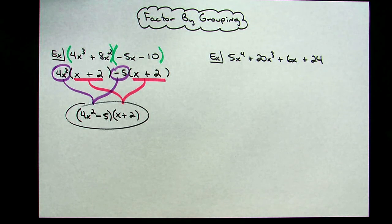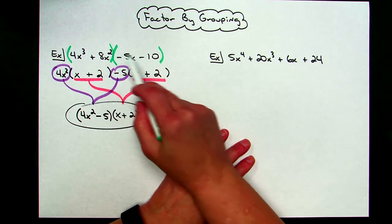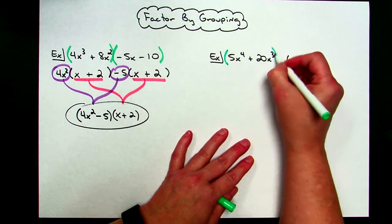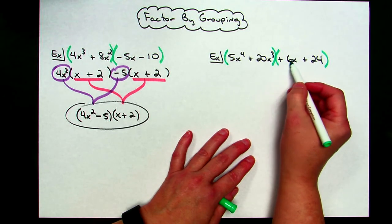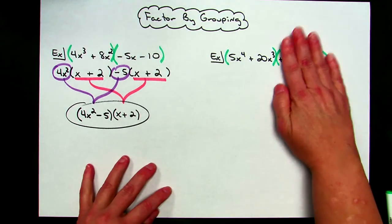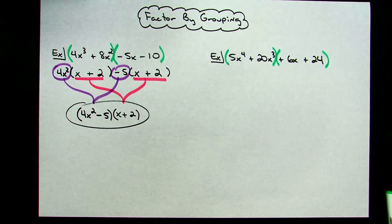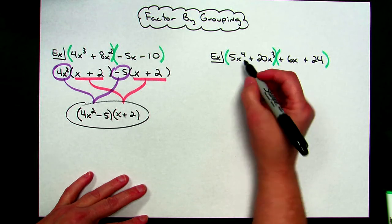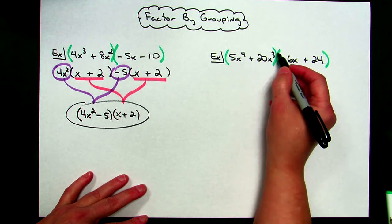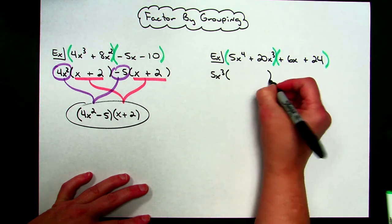Looking at this second example, I'm going to start off by doing the exact same thing. I have four terms, so I can group the first two together and group the second two together — and hopefully this will work. I included that plus sign inside that set of parentheses, because that tells me I clearly have a positive 6x sitting right there. Again, I'm going to ignore the second binomial and only focus on this first part. I'm going to take out the greatest common factor — between 5 and 20, the biggest thing I can take out is going to be a 5. Looking at the variables, I can take out at most an x to the third, so I will have 5x to the third.